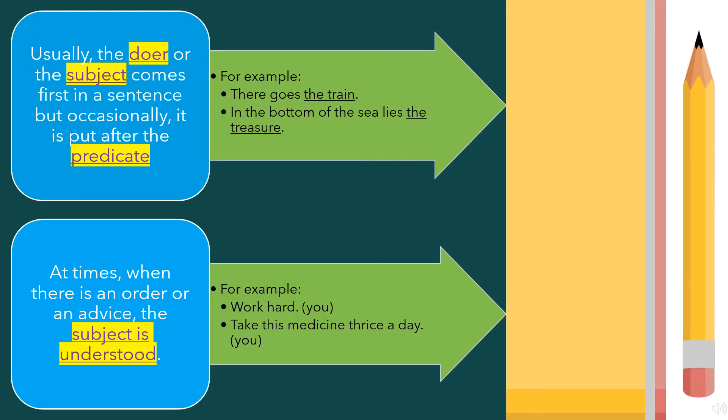Usually, the doer or the subject comes first in the sentence, but occasionally, it is put after the predicate. For example, there goes the train. Here, the train is a subject. In the bottom of the sea lies the treasure. The treasure is the subject. So, the things can change according to the sentence structure.